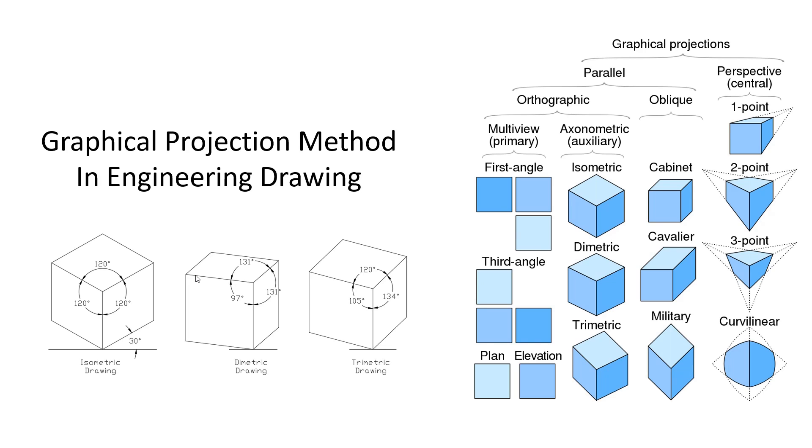In an isometric drawing, all three axes are equally and simultaneously inclined to the plane of the drawing. The angles between the axes are 120 degrees.